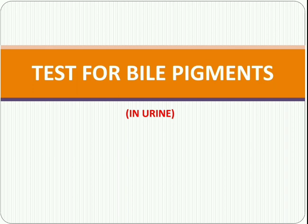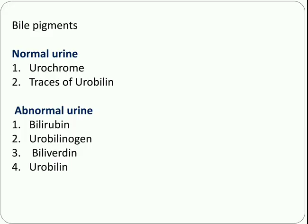Before moving towards the video, don't forget to subscribe the channel. As we all know, urochrome gives color to urine and is present in normal urine. Even traces of urobilin are present in normal urine. In abnormal urine, we can find bilirubin, urobilinogen, biliverdin, and urobilin as bile pigments.